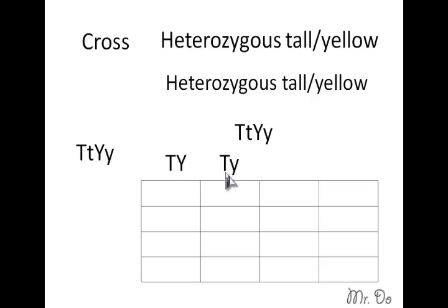Can you guess what the next one would be? The next one is a small t, capital Y, and the last one is a small t and a small y. So since this parent is the same thing as this parent, we can put the alleles exactly the same.